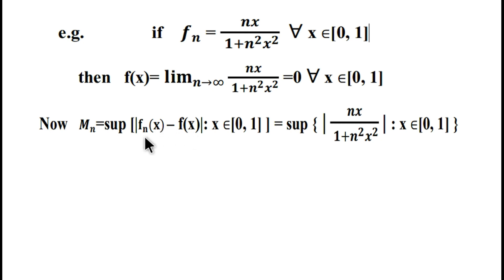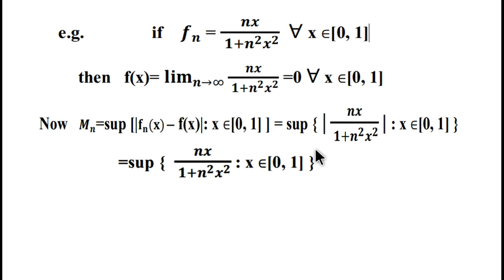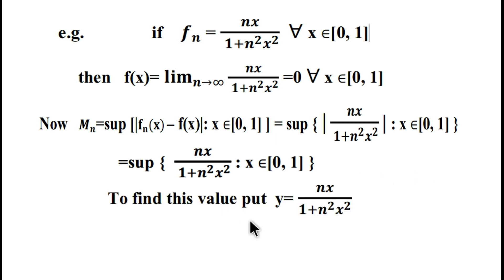Now M_n equals the supremum of |f_n(x) - f(x)|, but since f(x) = 0, we put only the value of f_n(x), that is nx / (1 + n²x²). As this expression is non-negative, we can remove the absolute value, and this set becomes nx / (1 + n²x²). We are interested in finding the maximum value of this set, so we write y = nx / (1 + n²x²).